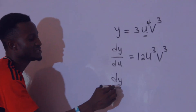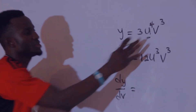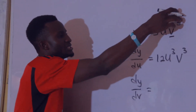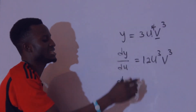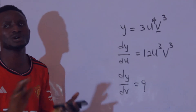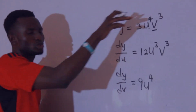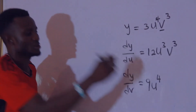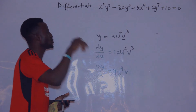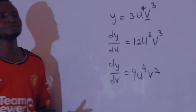Similarly, if asked to find dy/dv, your target is v. So you have 3 times 3 equals 9, bring u raised to the power 4 because you are less concerned about u, and your v target becomes v raised to the power 3 minus 1, which is v squared.